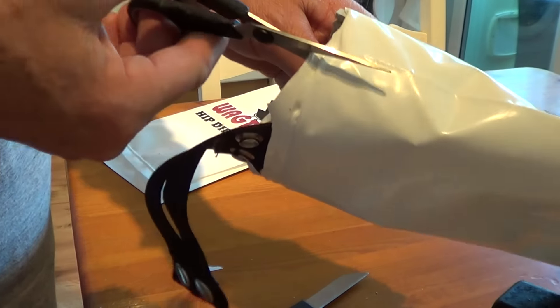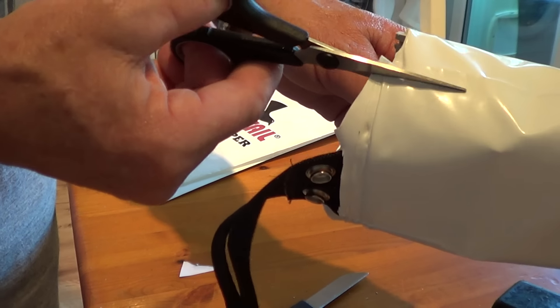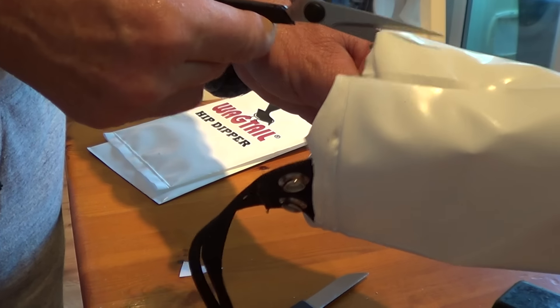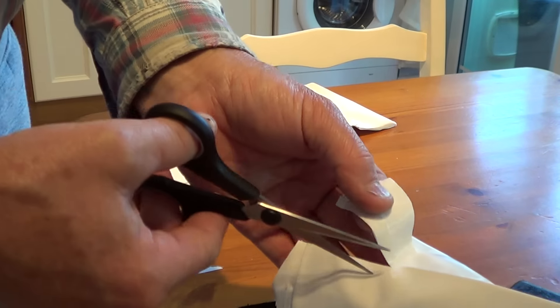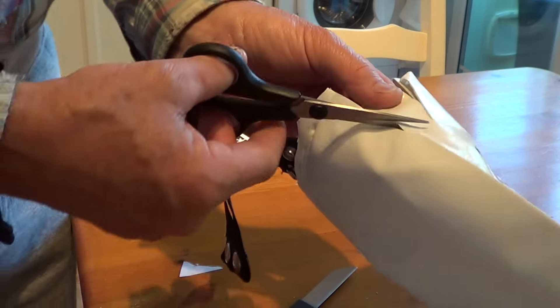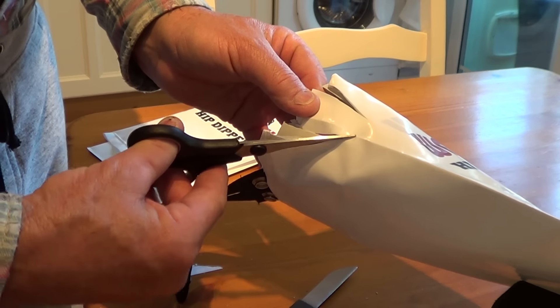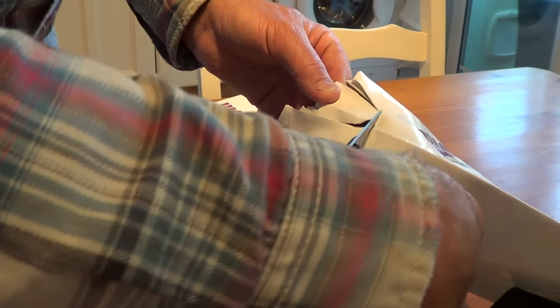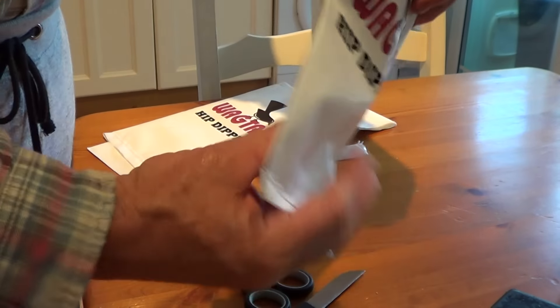Just get the scissors, and from the edges that you've cut, go right down almost to the bottom. There you go. And then make a rounded off cut at the bottom like that. And there you have it.